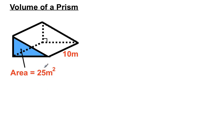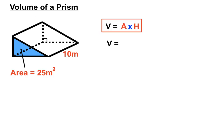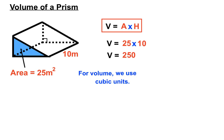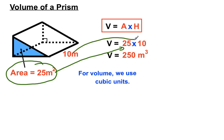They've been very generous here — they've given us the area of that blue triangular end shape, the cross-sectional shape, as 25 metres squared, and the height of the prism is 10 metres. Using our formula: area of 25 times height of 10 gives us 250. Since we're working in metres and volume uses cubic units, our answer is 250 metres cubed.